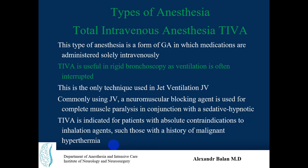Total intravenous anesthesia (TIVA) is a form of general anesthesia in which medications are administered solely intravenously. It is useful in rigid bronchoscopy as ventilation is often interrupted and jet ventilation is applied at the tip of the bronchoscope to administer oxygen at high velocity and pressure. TIVA commonly uses jet ventilation and a neuromuscular blocking agent for complete muscle paralysis. TIVA is indicated for patients with absolute contraindications to inhalation agents, such as a history of malignant hyperthermia, which can be triggered by inhalatory anesthetics and succinylcholine.